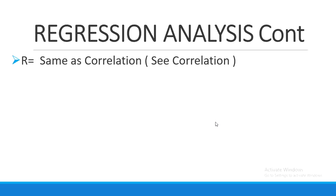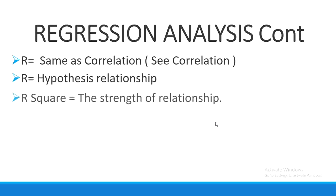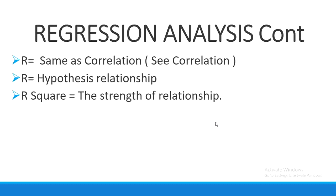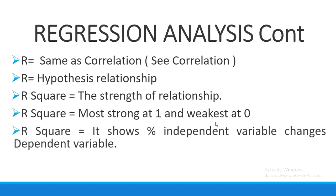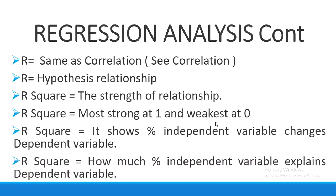The R value is the same as correlation — it tells the relationship between variables and explains your hypothesis relationship. R-square tells the strength of the relationship between your variables and how strong or weak it is. R-square also tells you how much the independent variables are explaining or changing your dependent variable.